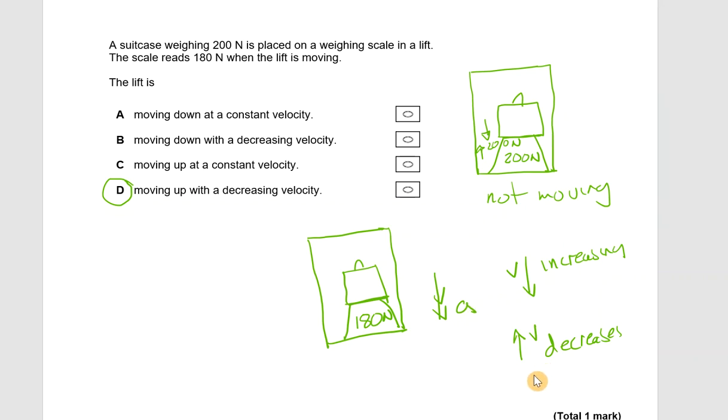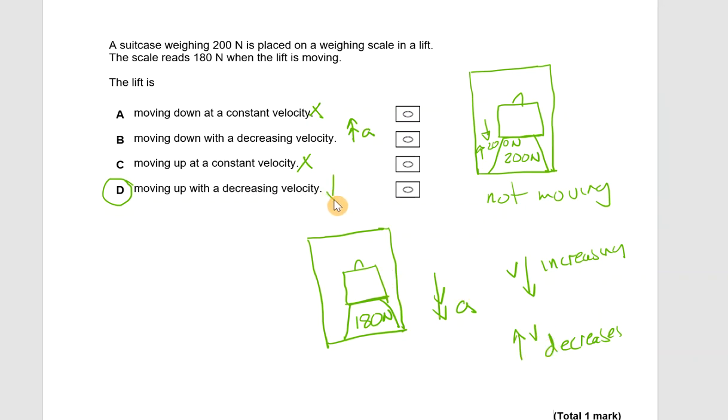Let's have a look at the possible answers. Moving at a constant velocity? No, constant velocity isn't accelerating at all. Moving down with a decreasing velocity? Now if you're moving downwards with a decreasing velocity, you would be accelerating in an upwards direction. Moving at a constant velocity? No. Moving up with a decreasing velocity? Yes. Moving upwards with a decreasing velocity does mean you are accelerating downwards.